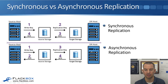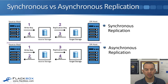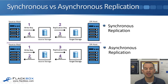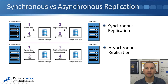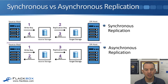With asynchronous replication, the source host sends a write request to its source storage system, and then the source storage system immediately sends an acknowledgement back to the client. Then, based on a predetermined schedule that you decide — for example, once every 10 minutes — the source storage sends all of the data written to it in the previous 10 minutes to the target storage.